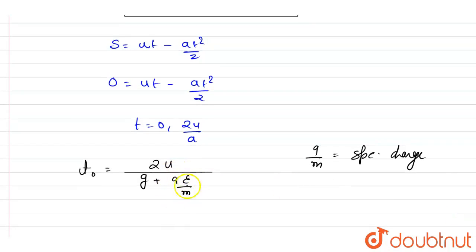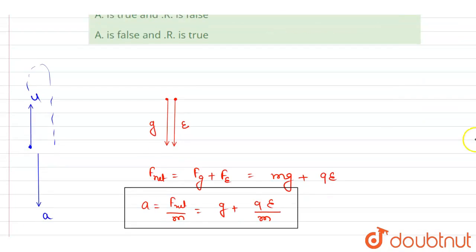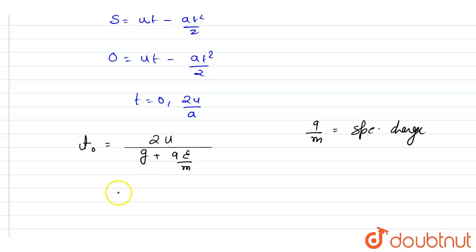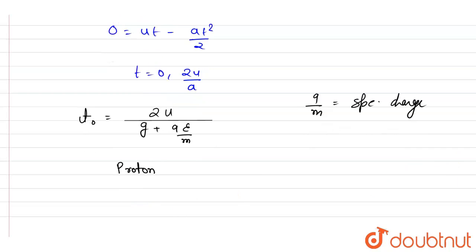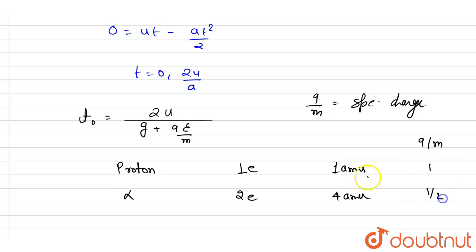The time of flight is inversely related to specific charge. The time of flight is less for proton because the proton has a higher specific charge. The proton has charge 1e and mass 1 amu, while the alpha particle has charge 2e and mass 4 amu. Comparing the two, the specific charge of alpha particle is 2/4 = 1/2, which is less.